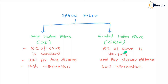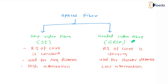Step index fiber is mainly used for data transmission over long distances, while the graded index fiber is used for shorter distances. Another important point is that in step index fiber the attenuation rate is high compared to graded index fiber, where the attenuation is very low.